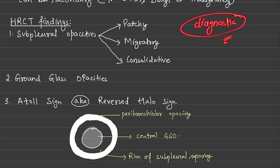What you will find in HRCT is the presence of subpleural opacities. The word to be remembered is subpleural - where do the opacities lie? In the subpleural region.